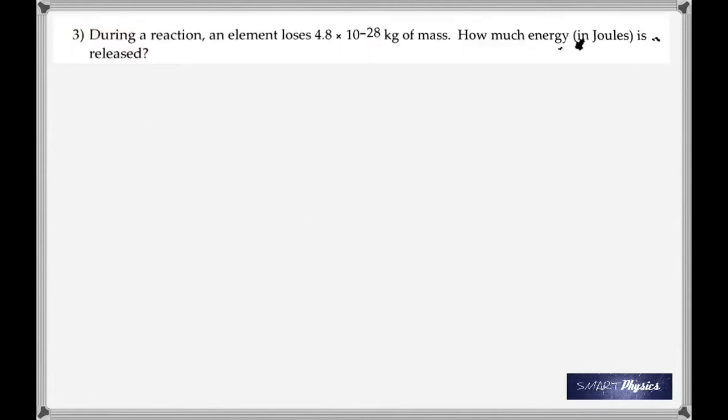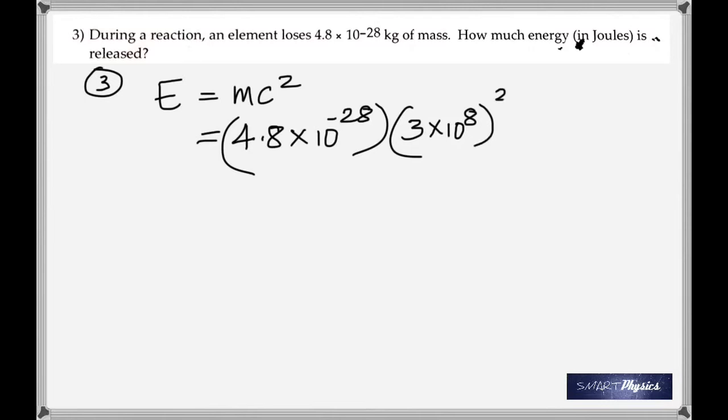During a reaction, an element loses 4.8 times 10 to the minus 28 kg of mass. How much energy is released? It's a direct application of E is equal to mc squared. The mass is in kilograms, so you are going to get the energy in joules. C is obviously the speed of light. So you get 4.32 times 10 to the negative 11 joules.